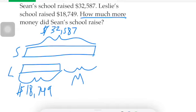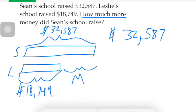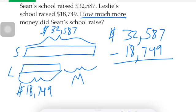How do we go about solving this? Hopefully you said subtraction, because that's what it is. We have thirty-two thousand five hundred eighty-seven dollars that Sean had, minus the eighteen thousand seven hundred forty-nine dollars that Leslie made. We're going to check our numbers to see if we can subtract.